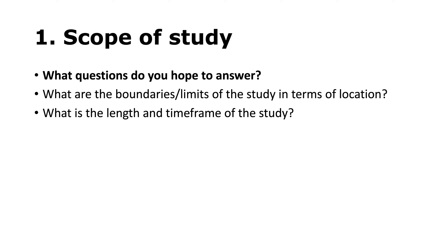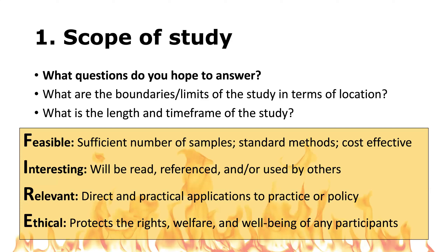For the scope of study, we want to determine first and foremost what questions we are hoping to answer. Are there boundaries or limits in terms of location? Are there boundaries in terms of the length and timeframe of the study? We want to make sure the study is feasible — a sufficient number of samples using standard methods while being cost effective. We also want to make sure it's interesting, that it will be read and referenced by others, relevant with direct practical applications, and ethical — protecting the rights, welfare, and well-being of any participants or community members impacted.